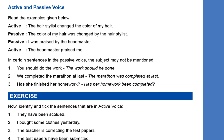In passive voice: 'The color of my hair was changed by the hair stylist.' In active voice, the subject becomes the object in passive voice, and the object becomes the subject. Here, 'the hair stylist' is the subject in active voice and becomes the object in passive voice. 'The color of my hair' is the object in active voice and becomes the subject in passive. The word 'by' is used to connect the object with the subject in passive voice.